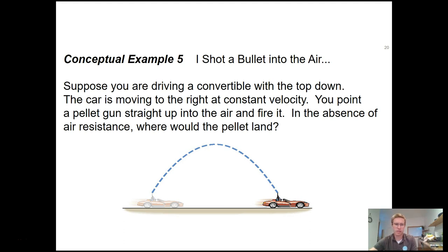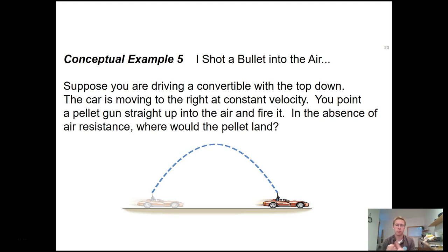Before the second example problem, here's a quick conceptual question — always a fun one. Imagine you're in a convertible driving at 50 miles an hour. You take a pellet gun, aim it perfectly vertically straight up, and pull the trigger. Assume the car is moving at a constant 50 miles an hour with no air resistance. Where does the pellet land — in front of you, behind you, or right back in the car? You could pause if you want to think about it, but I'll go ahead and tell you.